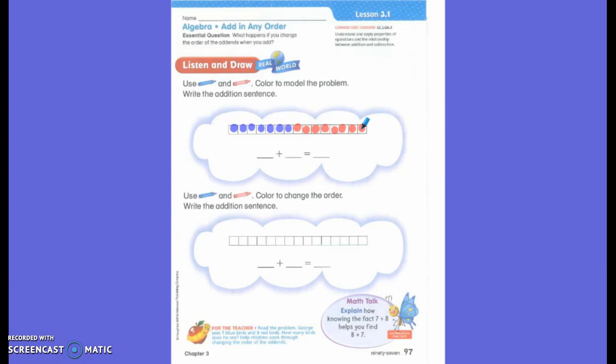How many birds does he see? So I know that we are adding because George sees some birds and then he sees more birds. I have a keyword in there and it's asking me how many he sees all together. I want the whole thing.